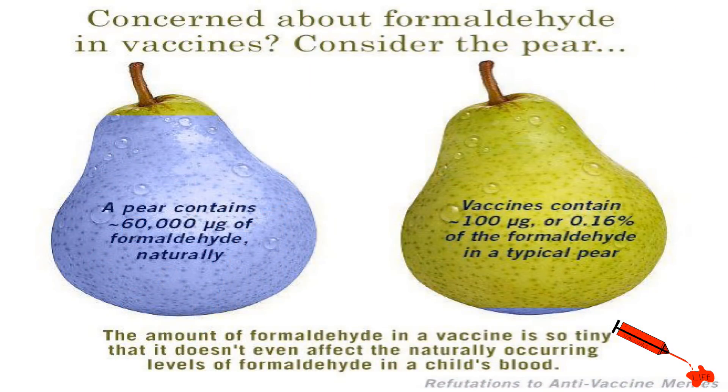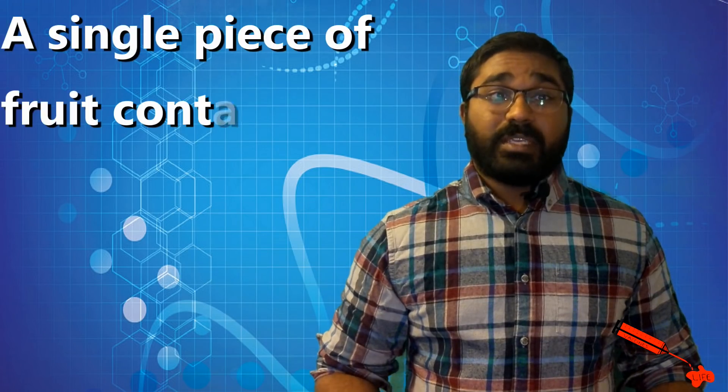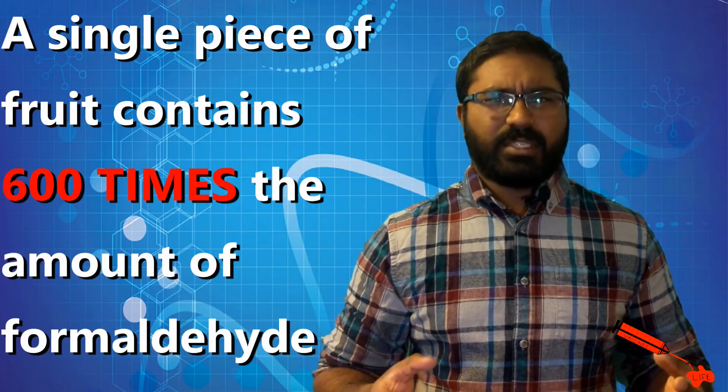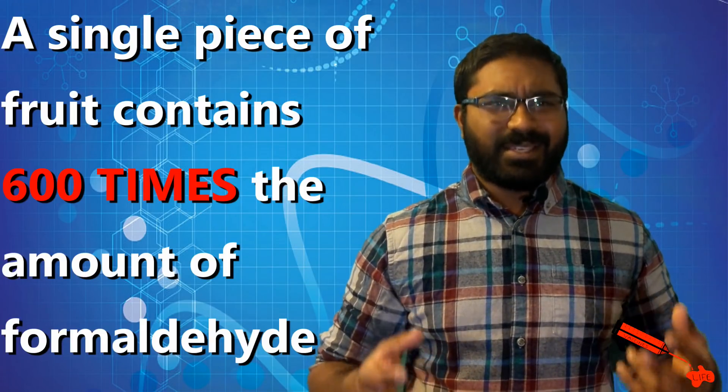So I guess you don't ever want to give your child a piece of fruit. Did you know a typical vaccine might contain up to 100 micrograms of formaldehyde? While an average pear contains around 60,000 micrograms of formaldehyde. That's the key difference. That means a single piece of all-natural fruit has around 600 times the amount of formaldehyde in it as a single shot.